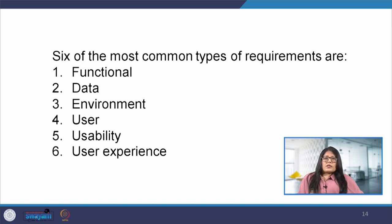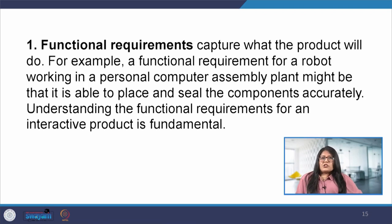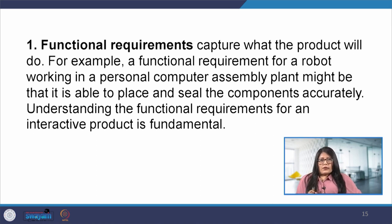Six of the most important types of requirements are: functional, data, environment, user, usability and user experience. The functional requirement captures what the product will do. For example, a functional requirement for a robot working in a personal computer assembly plant might be that it is able to place and seal the components accurately. Understanding the functional requirements for an interactive product is an essential part of the process. Next we have the data requirement, which captures the type, size, accuracy, value, and so on of the required data.